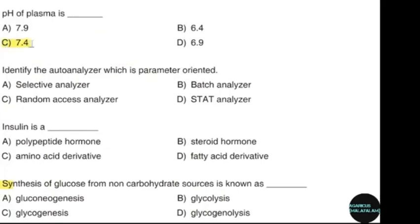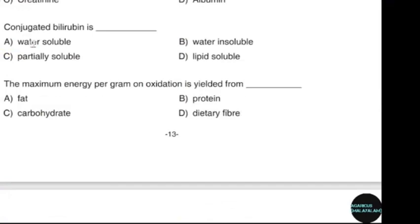pH of plasma is — correct answer option C: 7.4. Conjugated bilirubin is — correct answer option A: Water soluble. The maximum energy per gram on oxidation is yielded from — correct answer option C: Carbohydrate.